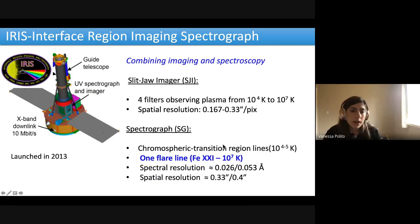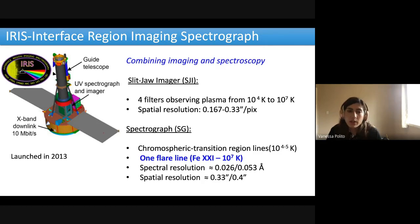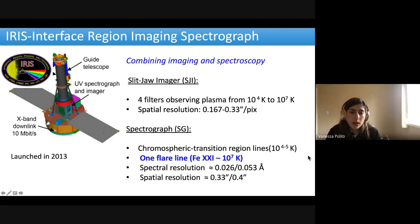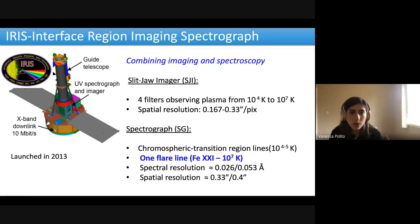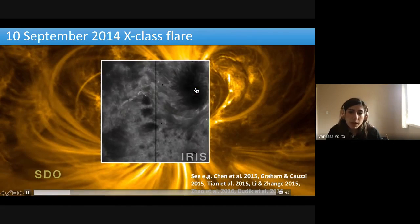With the advent of IRIS, our understanding of chromospheric evaporation has greatly improved. IRIS is a simultaneous imager and spectrograph, meaning we have context images together with the spectra — which we don't have with EIS, for example. This is really important to understand where we are actually observing. IRIS has four filters on the imager observing mostly chromospheric and transition region plasma at very high resolution, and the spectrograph also observes lines from the photosphere through the transition region. There is also one flare line — Fe XXI — formed around 10 million degrees. The resolution is around 10 times better than EIS and CDS.